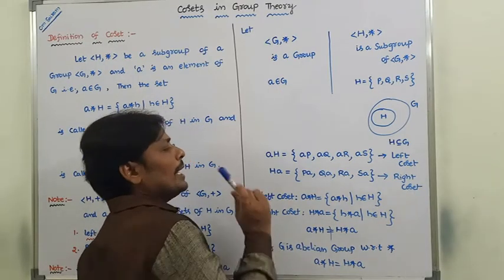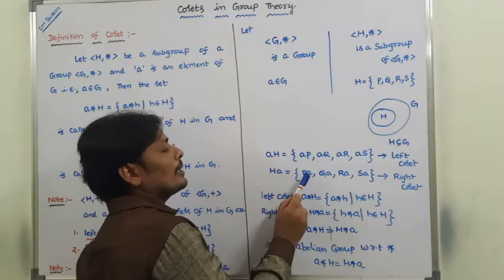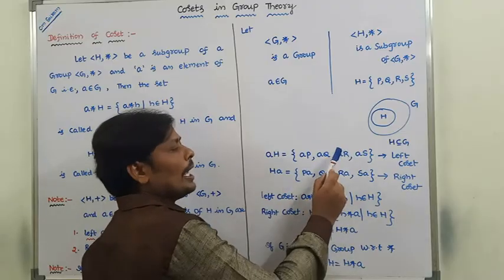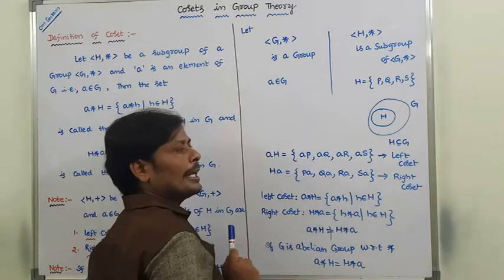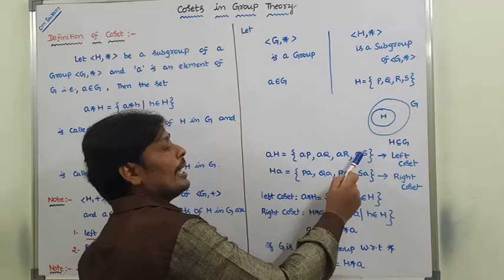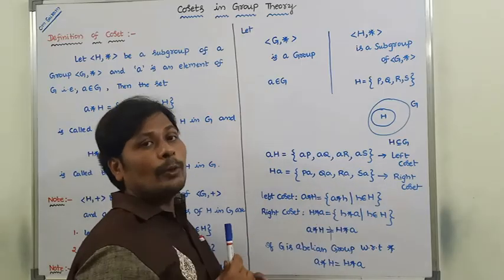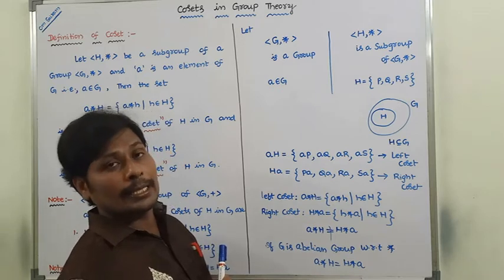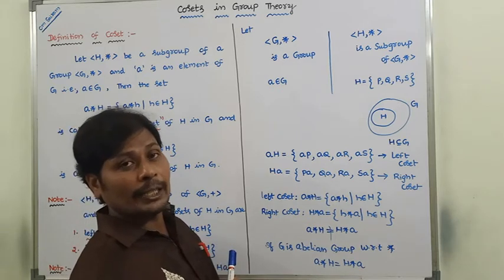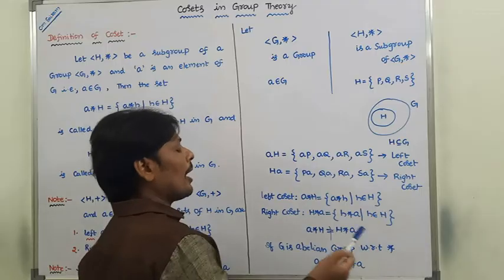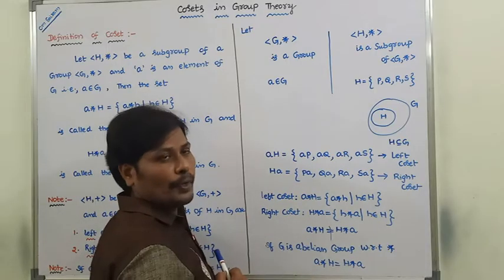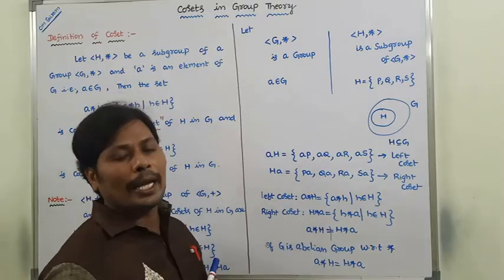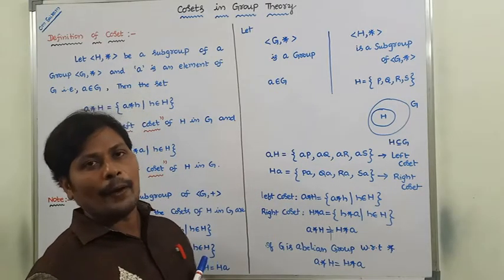So that means A·p equals p·A, A·q equals q·A, A·r equals r·A, A·s equals s·A — whenever the commutative property is satisfied with respect to the binary operation star by G. Hence we can say that A·H equals H·A.